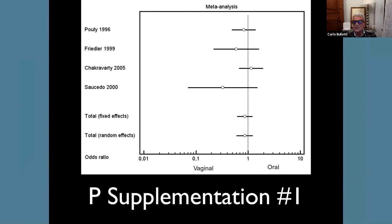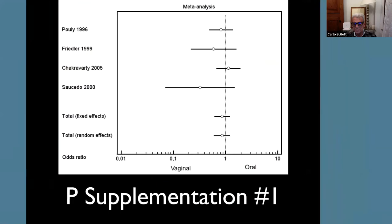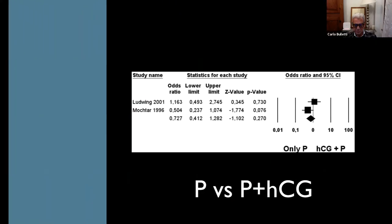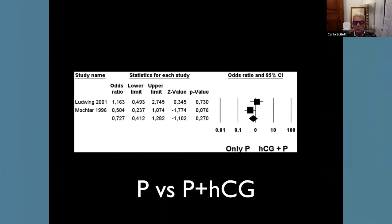Vaginal versus oral: there is a complete advantage of vaginal. The use of progesterone versus the use of progesterone plus hCG shows no difference in terms of pregnancy outcome, and there is more risk of hyperstimulation with hCG.